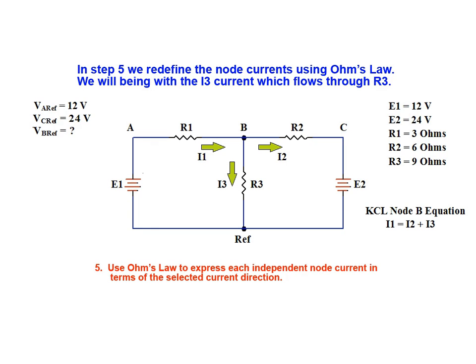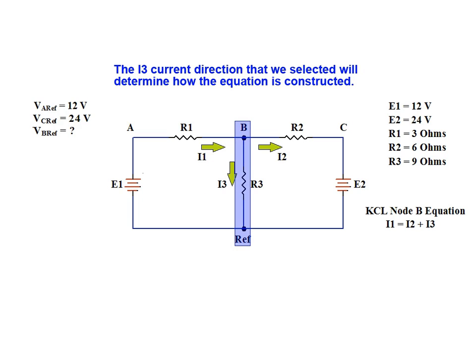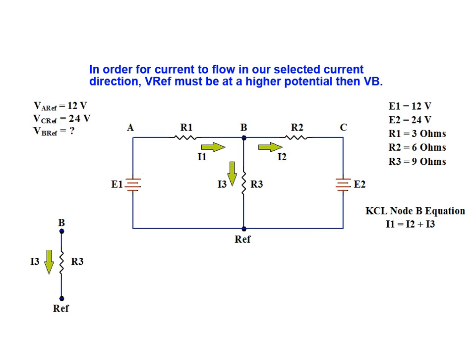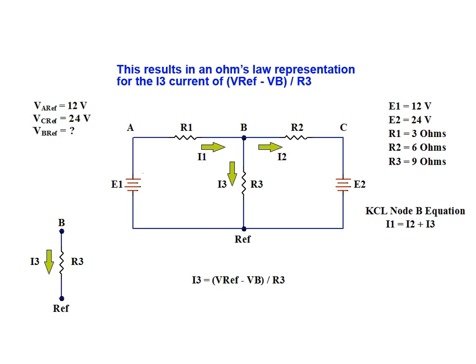In step 5, we redefine the node B currents using Ohm's law. We will begin with the I3 current which flows through resistor R3. The I3 current direction that we selected will determine how the equation is constructed. In order for current to flow in our selected current direction, Vref must be at a higher potential than Vb. For the resulting I3 current to be positive, we take the negative end away from the positive end, giving an Ohm's law representation for I3 of Vref minus Vb divided by R3.